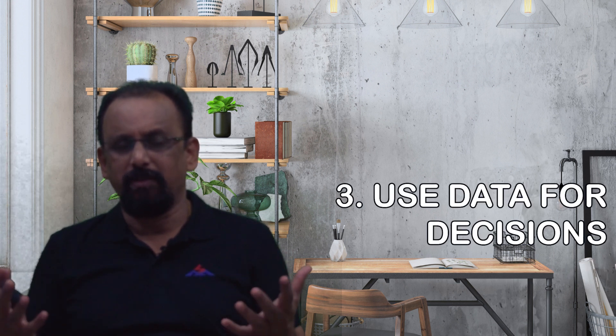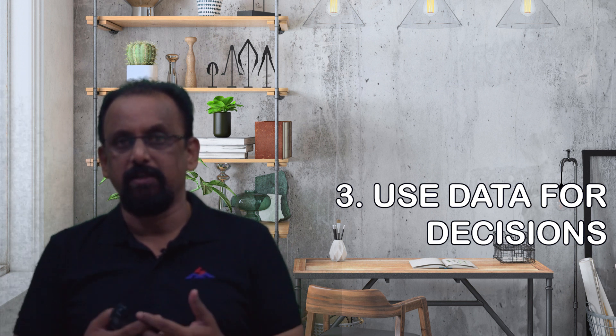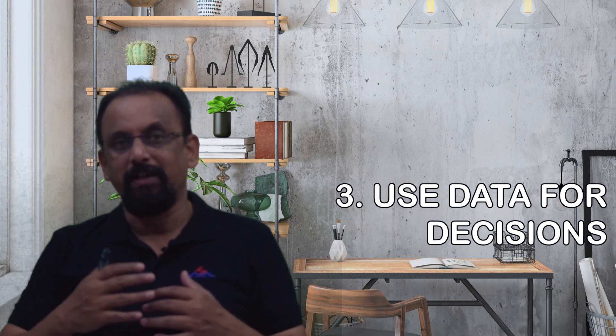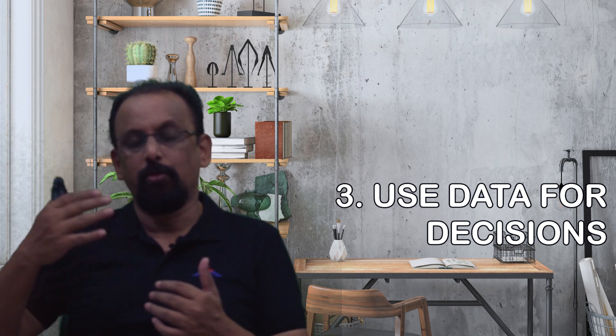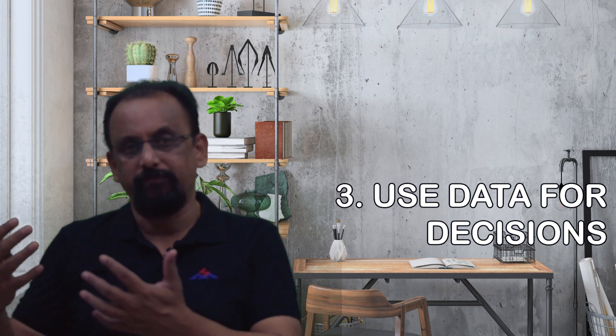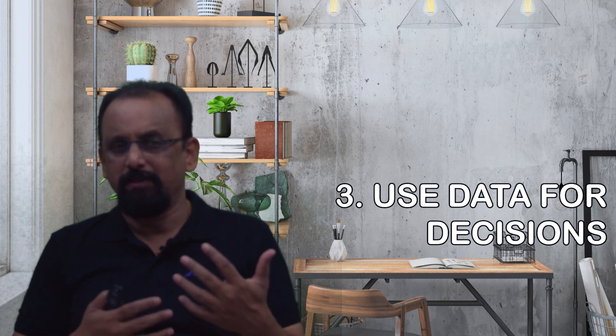Third important thing is use data for decisions. One of the reasons the fintech data, great amount of data of the customers are valued very, very high, and they are unicorns in many cases, is they know how to basically exploit the data pyramid, right from the granular data of the customers, for example, go one level up, one level up and then do something called predictive analytics. Predict if something is done, what is going to be the result.